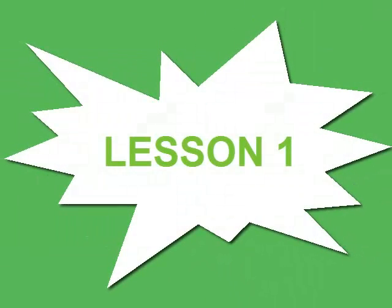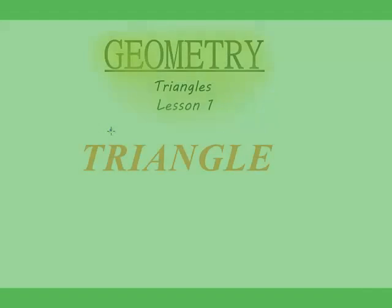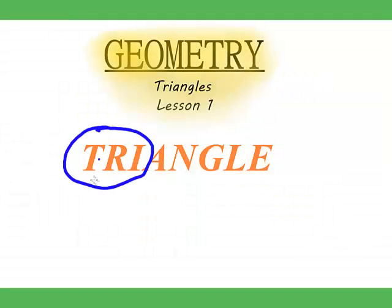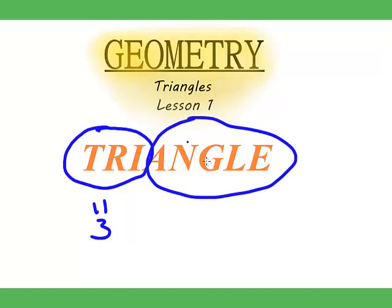In this lesson we will be looking at triangles. So what is a triangle? What does the word triangle mean? Well, tri means three. An angle means an angle, which is the space between a corner, or the space between two sides.